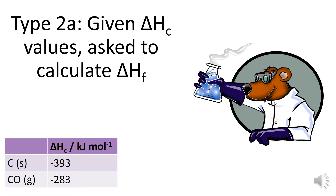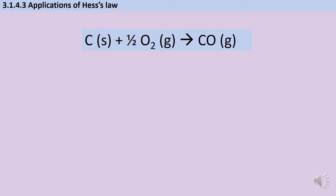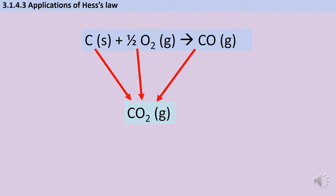Our next type of question uses a very similar cycle but flipped around — we're given the standard enthalpy of combustion and asked to calculate the standard enthalpy of formation. We'll start with the carbon monoxide example from the introduction: we're trying to work out the standard enthalpy of formation of CO, so the first step is to write a symbol equation representing that. Then we think about our combustion enthalpies — it's pretty obvious what's going to be made — and add arrows to show that each species is being combusted to carbon dioxide.